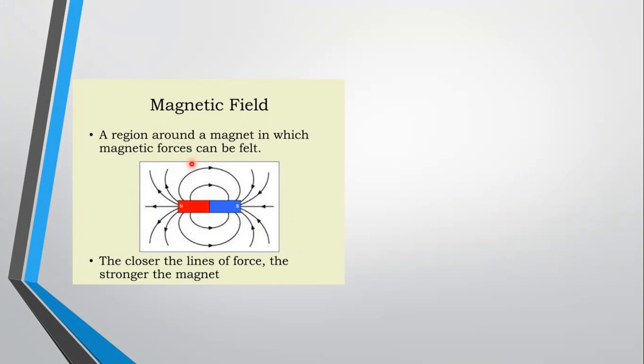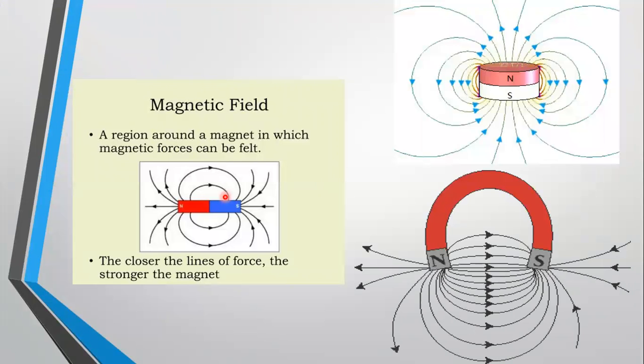Magnetic field lines always start from North Pole to South Pole. They are crowded at the poles where magnetic force is strongest. They do not intersect with each other. Different shapes of magnets exhibit different patterns of magnetic field lines.